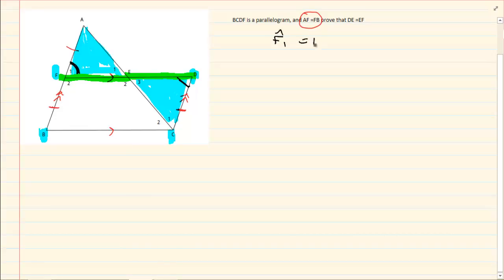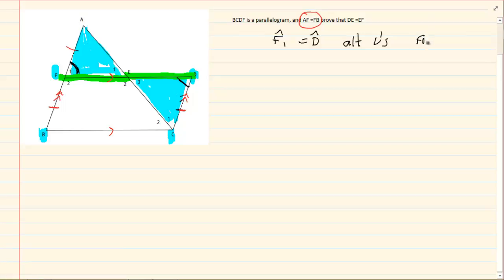F1 is equal to D because they are forming alternate angles. But how do I know they are forming alternate angles? Because I know that FB is parallel to DC. Why is it parallel? Because they told me that it's a parallelogram.